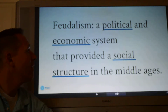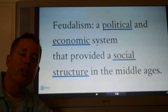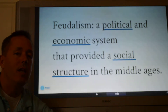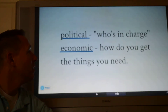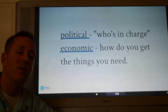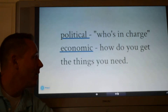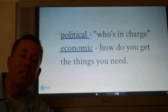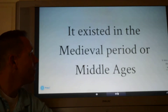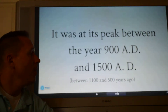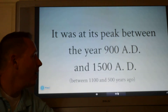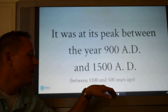Feudalism is a political and economic system that provided a social structure in the Middle Ages. We have our own social and economic structure today, but this is what they had in the Middle Ages. It was political because it determined who was in charge, and it was economic because it explained how people got the things they needed. It existed in the medieval period, also known as the Middle Ages, which were at their peak between 900 AD and 1500 AD.